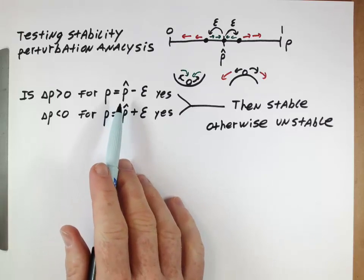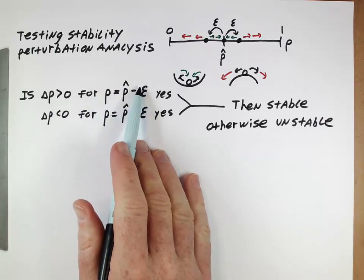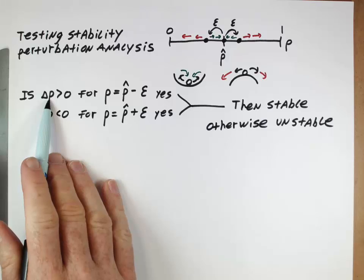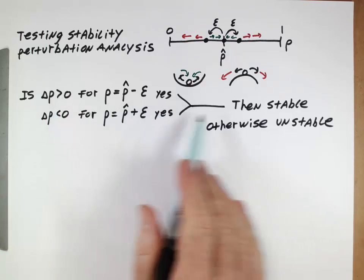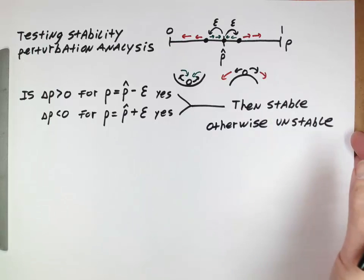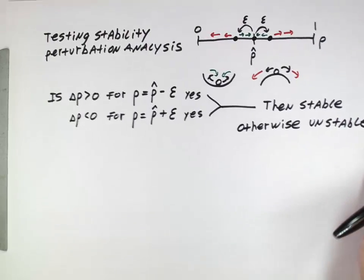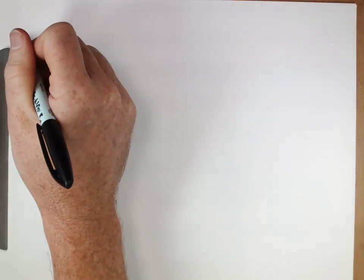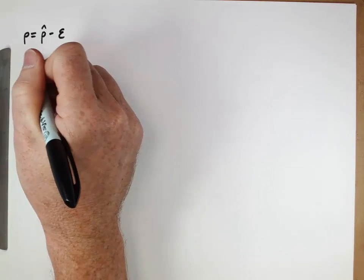So this is the analysis we want to do. We want to take our delta p equation from before, plug in these values, solve for the sign of delta p, and see whether we get these results or some other alternative. Let's look at that using the example we just derived for over-dominance. For the over-dominance equation, we're going to think about what happens when p is equal to the equilibrium minus epsilon.